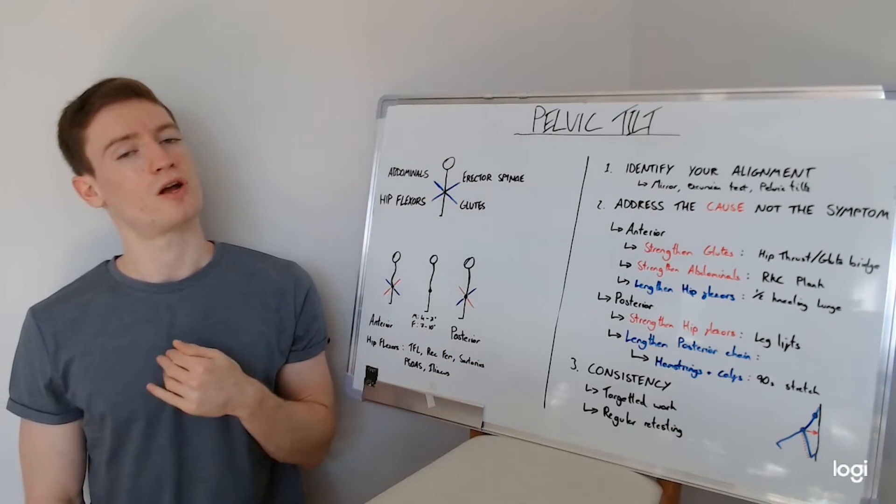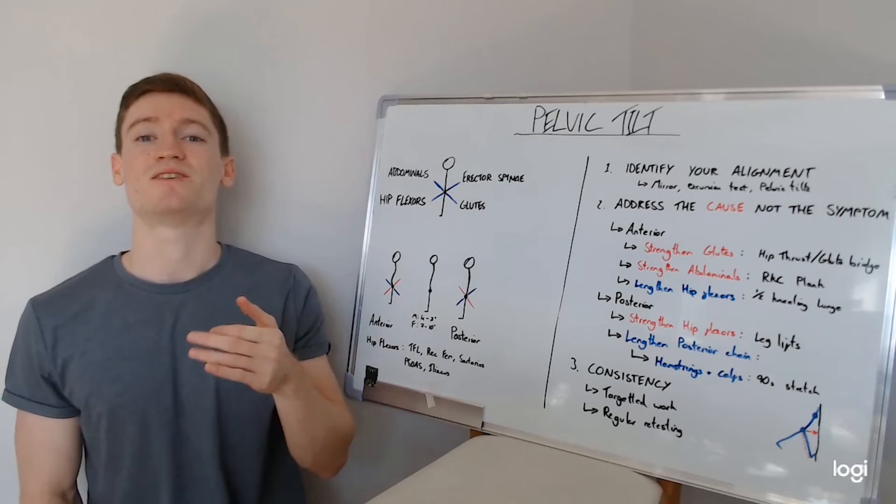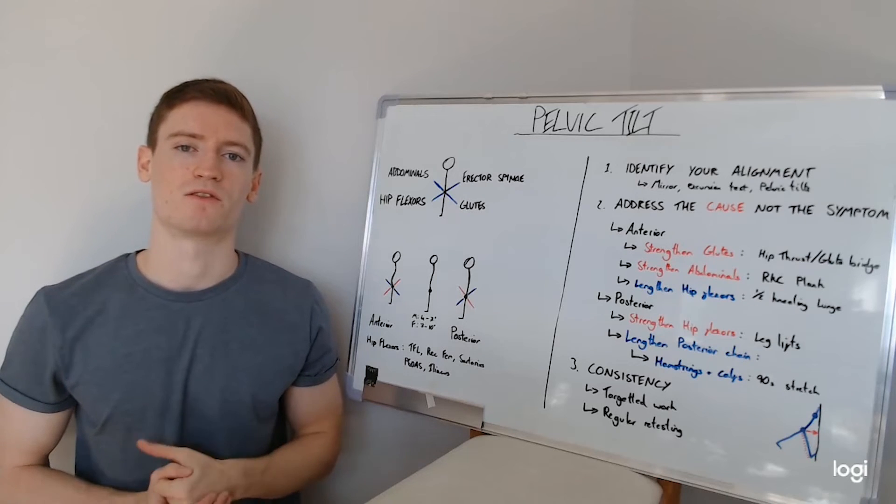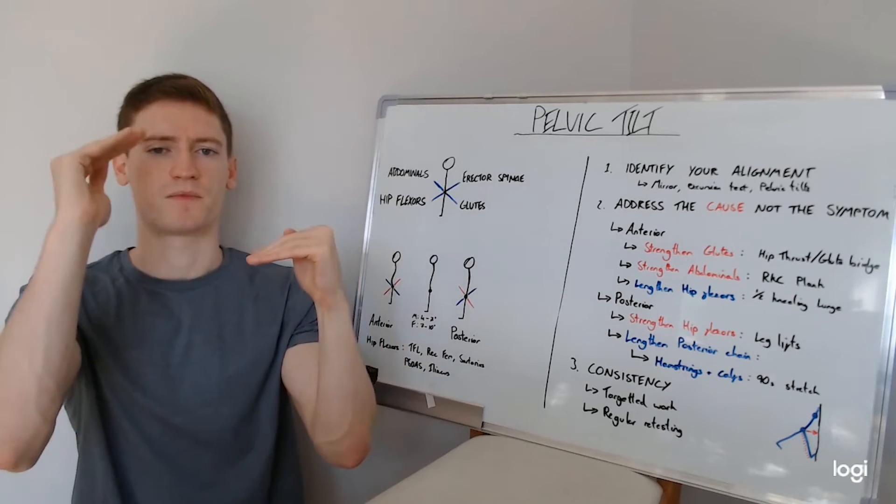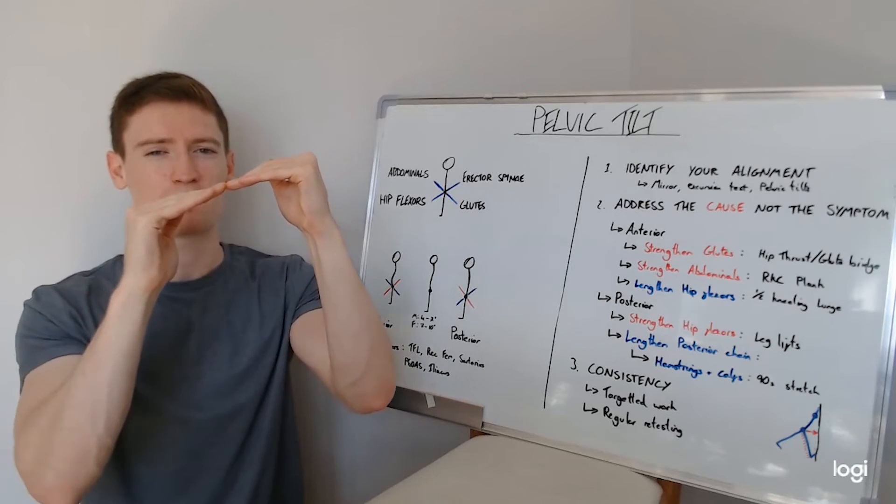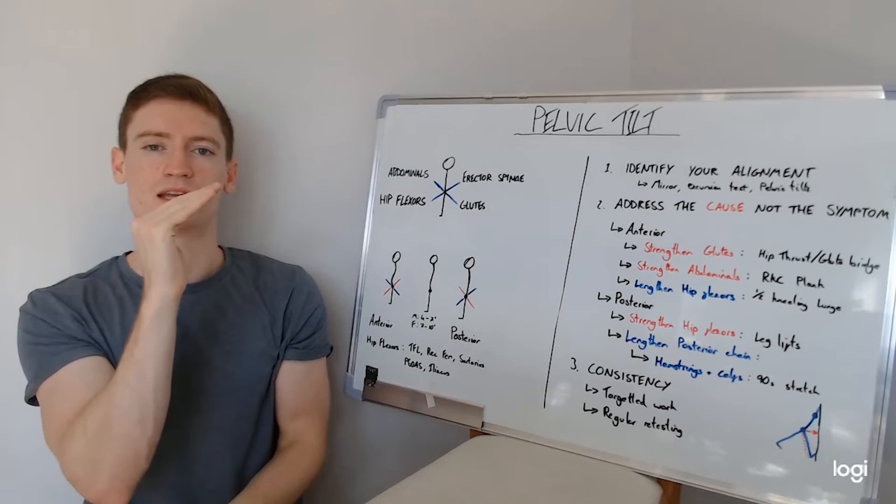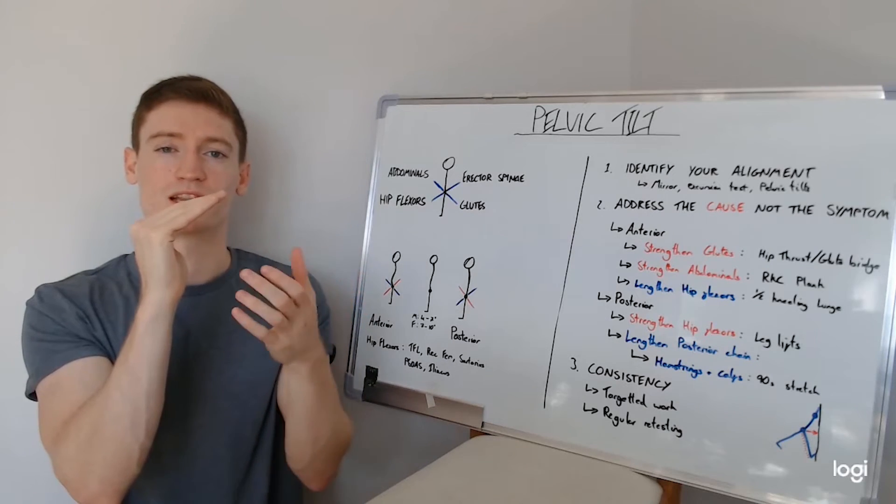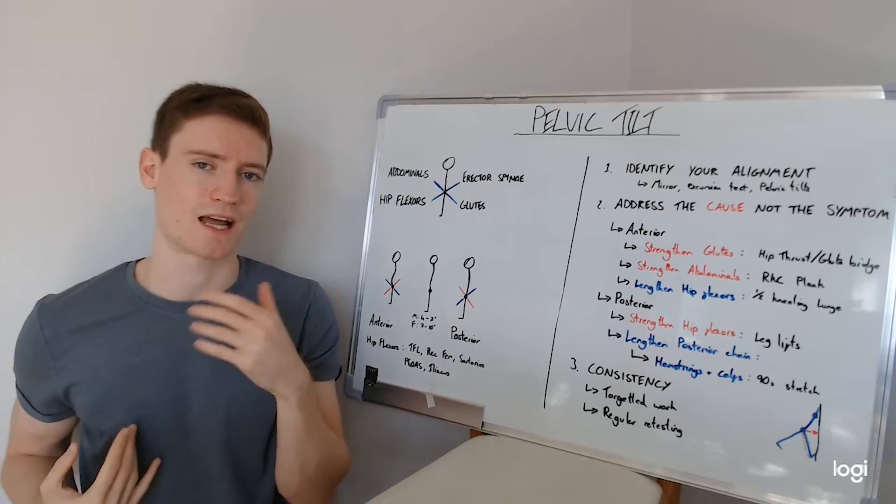In terms of the lengthening, we're going to focus a little bit more on the entire posterior chain. So the posterior chain is the muscles that run down the back of the body. So if you imagine again, we go back to that pelvis position where this is the front, this is the back. If we've got this posterior pelvic tilt, now everything that runs down the back of the leg is going to be getting shortened and going to get that adaptive shortening that leads to that tight feeling as well.